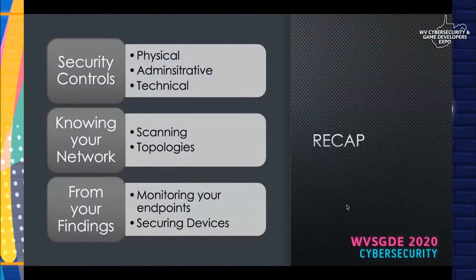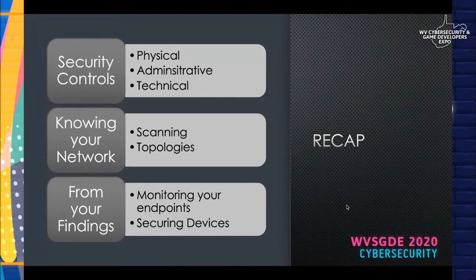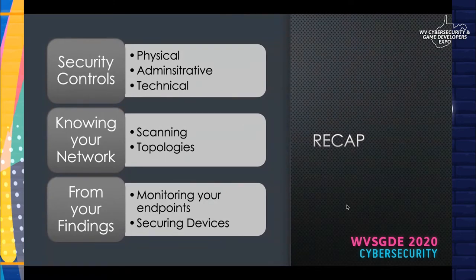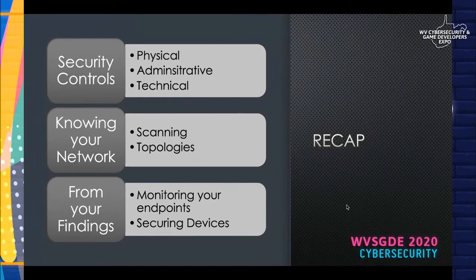Just a quick recap: if you didn't watch yesterday's stream, we talked about the three security controls — the physical, administrative, and technical. Those go along with securing your environment physically, making sure everything's locked down and under surveillance, and administratively having policies and procedures for end users and staff — the do's and don'ts in your environment.